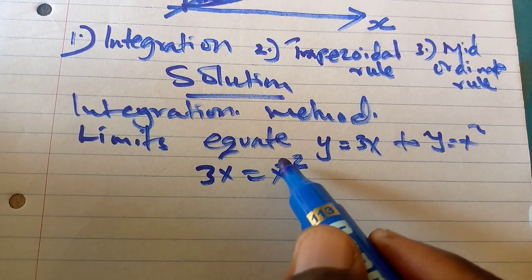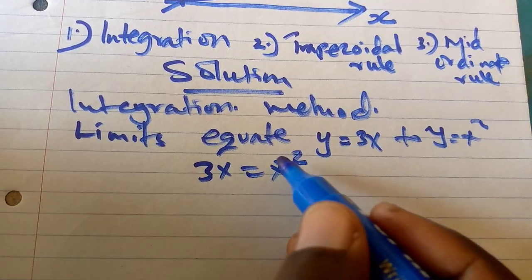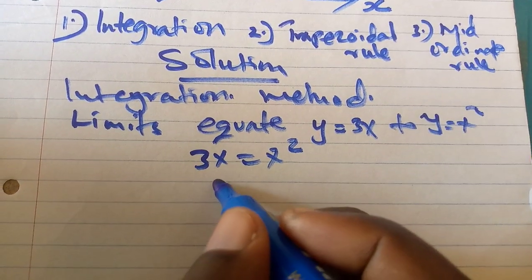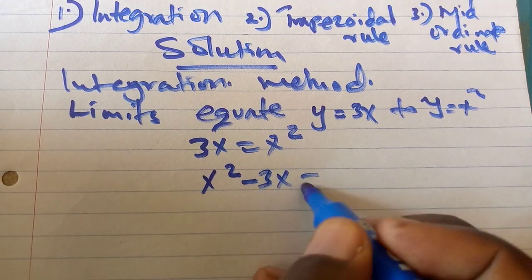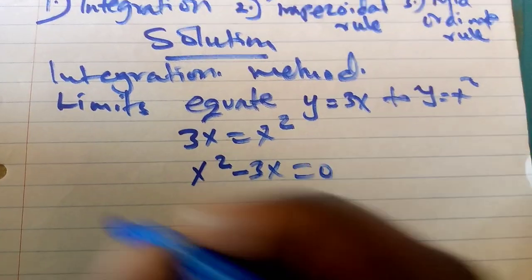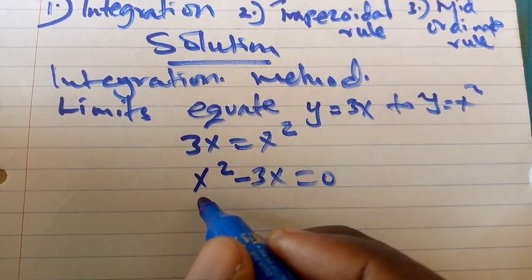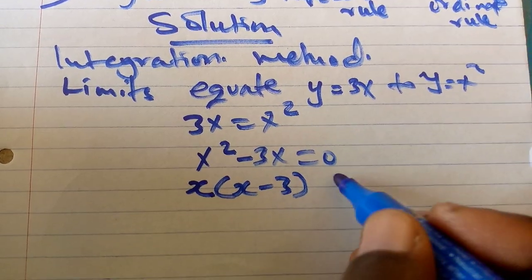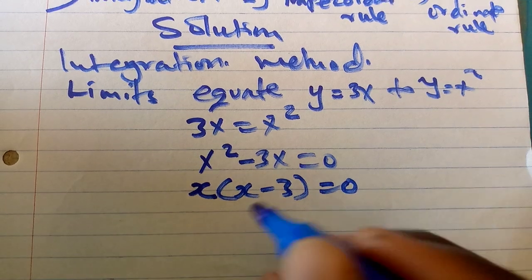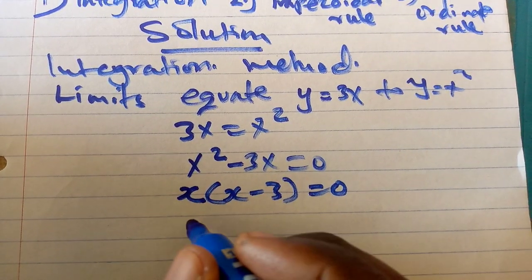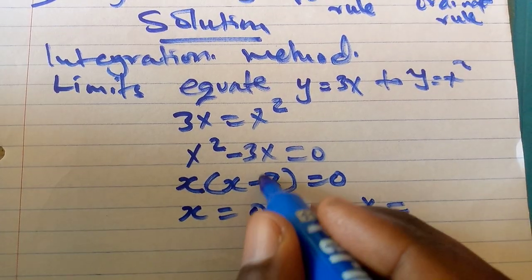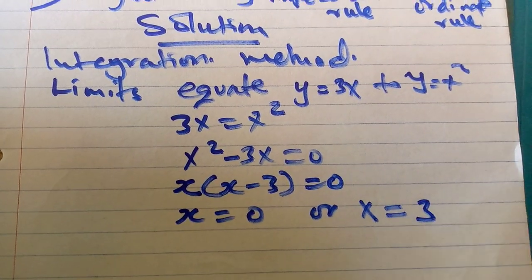So when I do that, 3x equals x squared. Then it is a quadratic equation. I need to bring 3x to the other side so that it gives me x squared minus 3x equals 0. Solving it quadratically, I can factor out x. I'll get x times (x minus 3) equals 0. Then it means that x is either 0 or another x is positive 3.